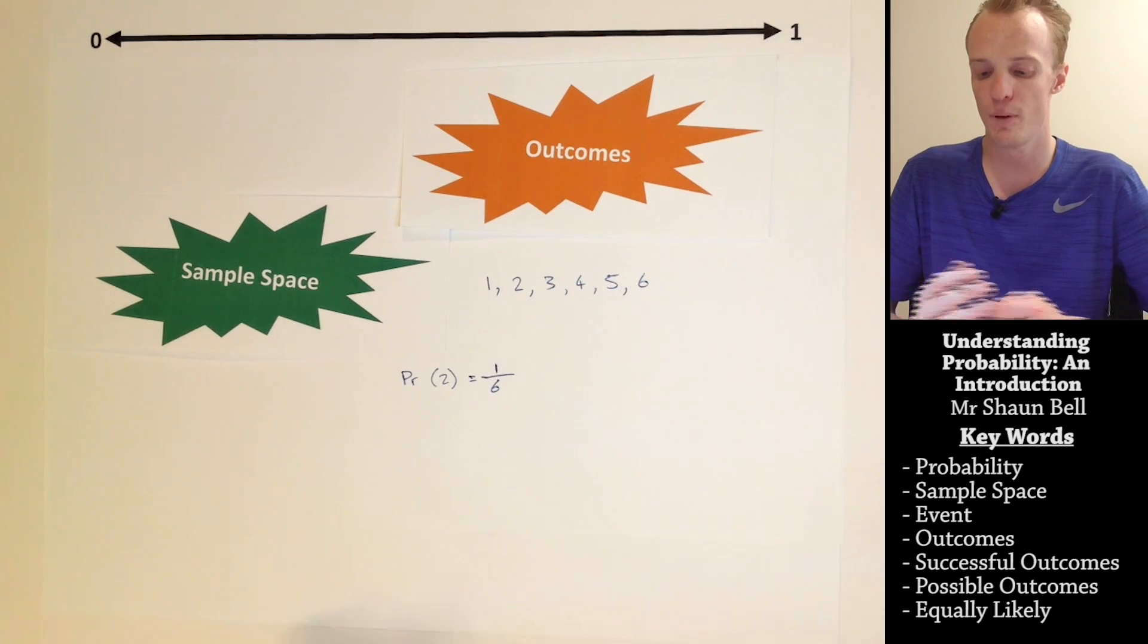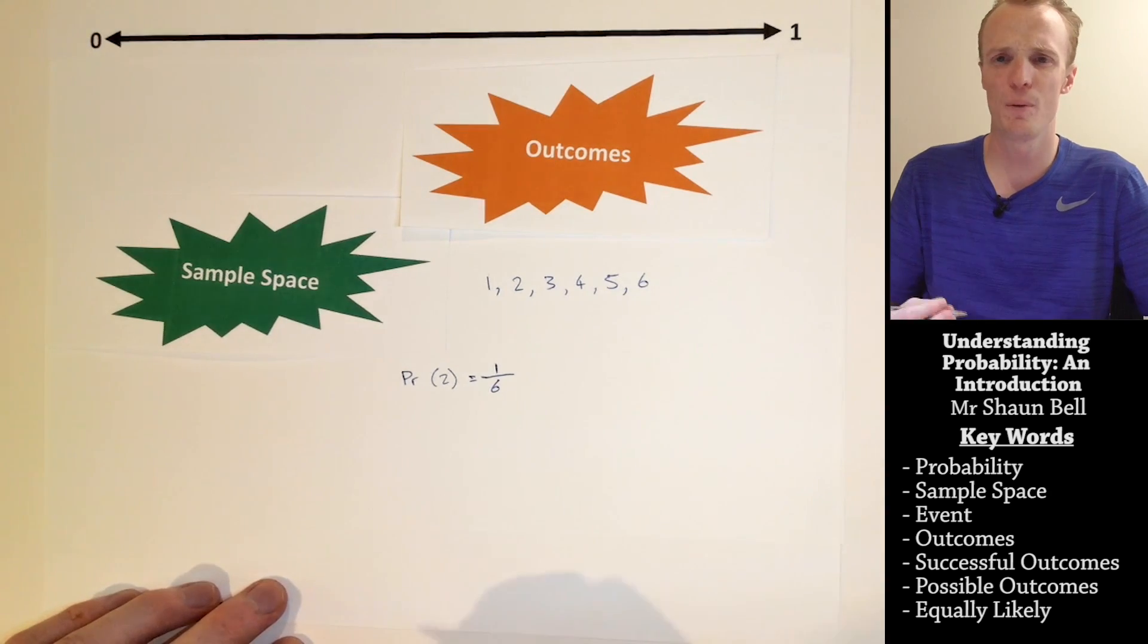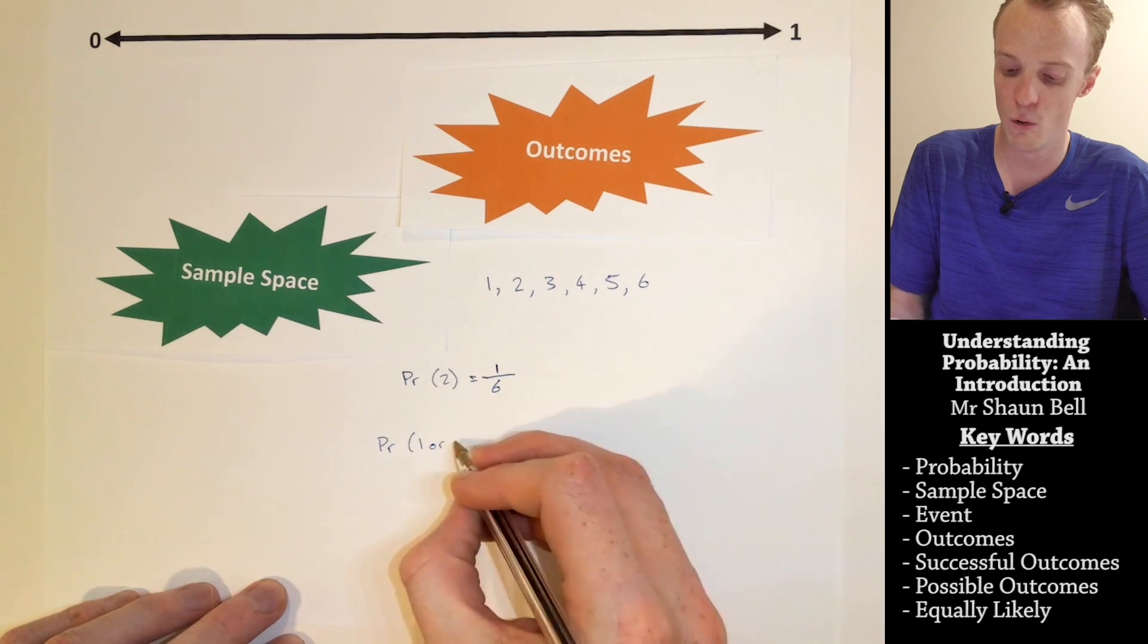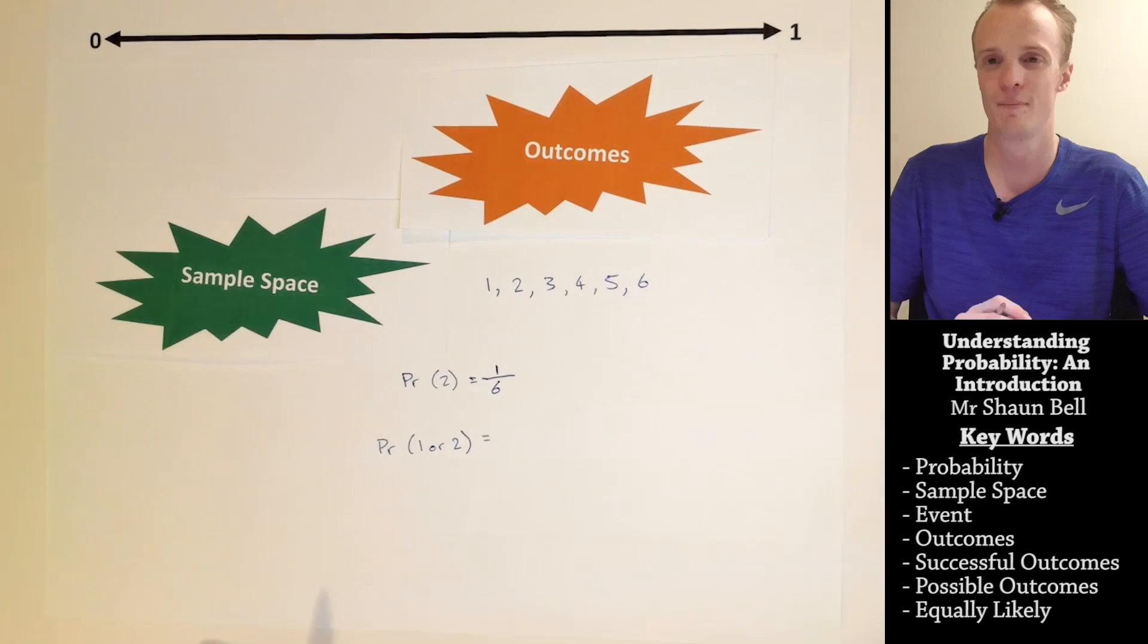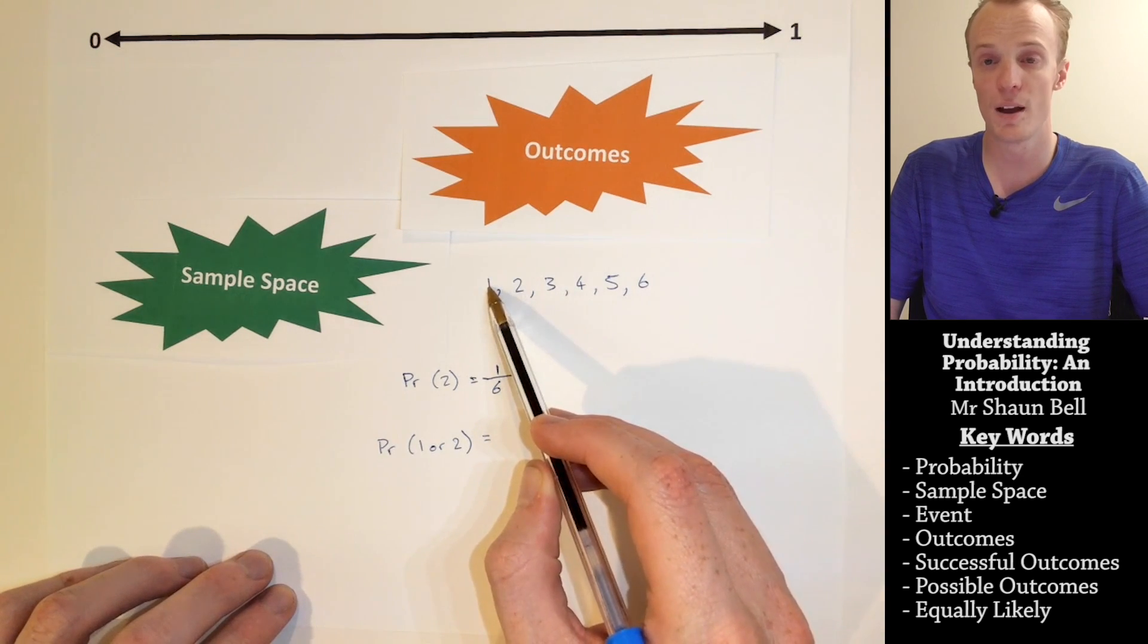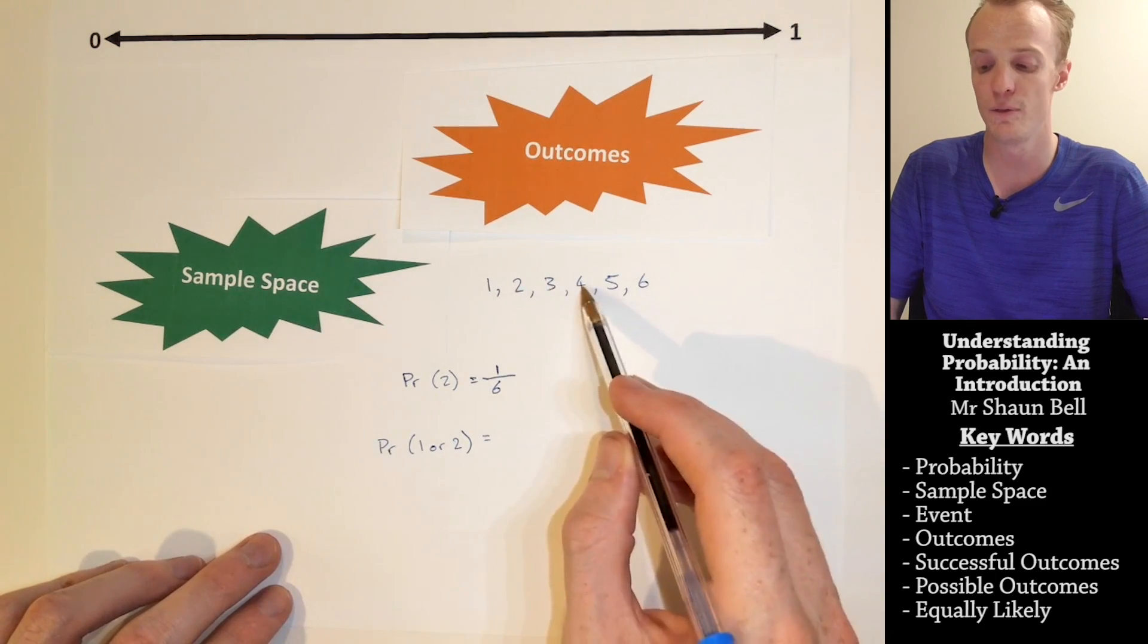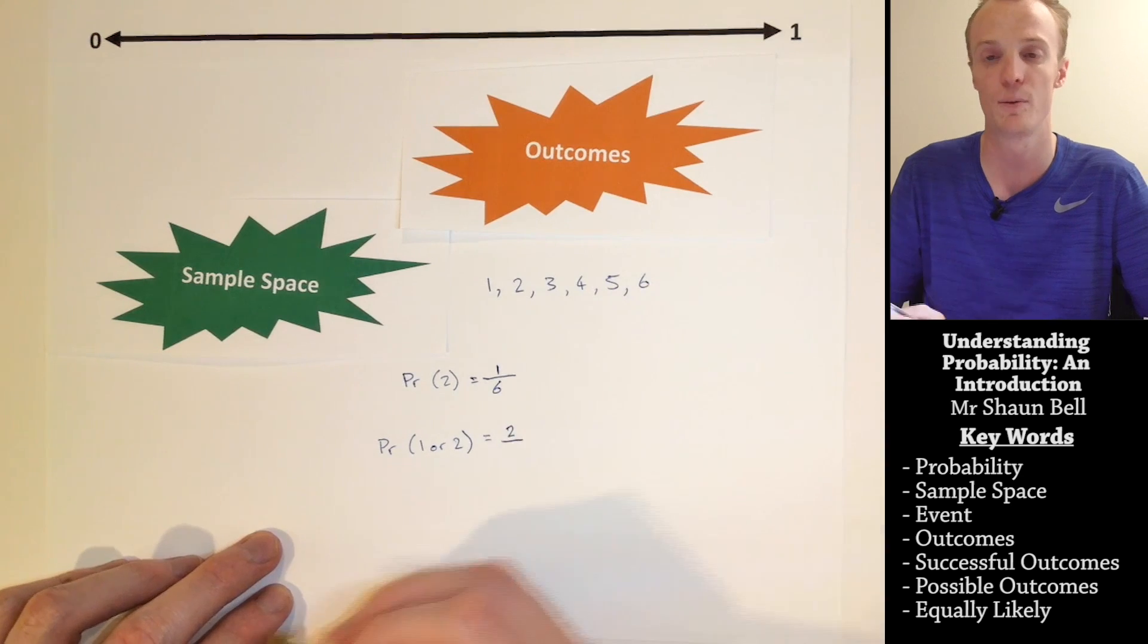So we've found that the probability of rolling a 2 is 1 in 6. What if we wanted to know what the probability of rolling either a 1 or a 2 is? Well, we go through the same procedure. We start with counting the total number of successful outcomes there are in our sample space. So, 1 is a successful outcome. 2 is a successful outcome. So we're at 2 so far. 3 isn't, 4 isn't, 5 isn't, 6 isn't. So we have 2 total successful outcomes.